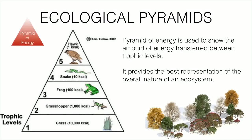The pyramid of energy counts the amount of energy at different trophic levels. Grasses have 10,000 kilocalories, grasshoppers 1,000, frogs 100, snakes 10, and a hawk or eagle only 1 kilocalorie. Overall energy decreases at each level, forming the pyramid of energy. The pyramid of energy can never be inverted because energy always decreases moving up the food chain.